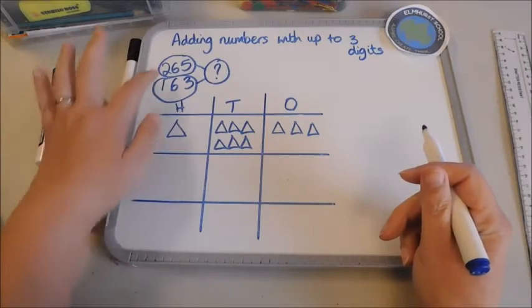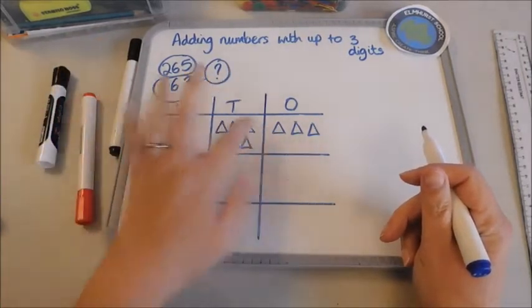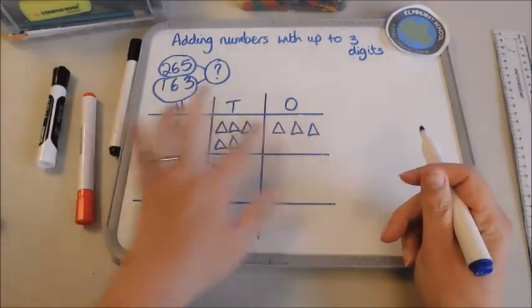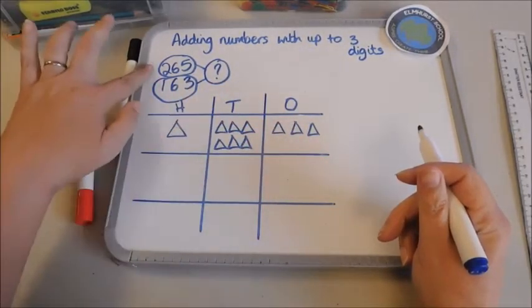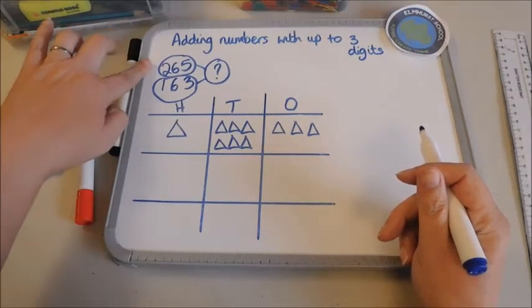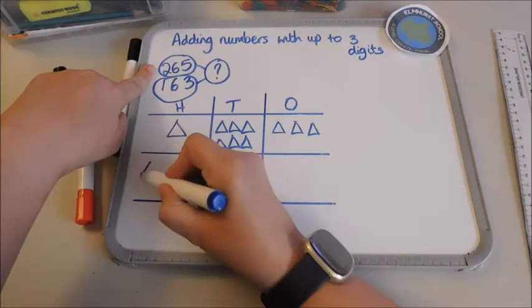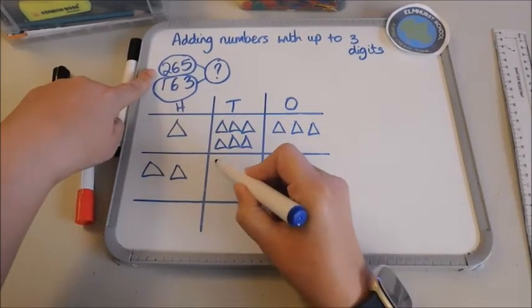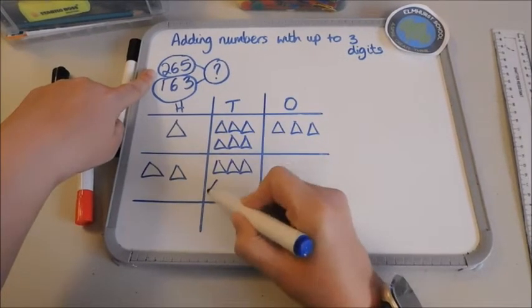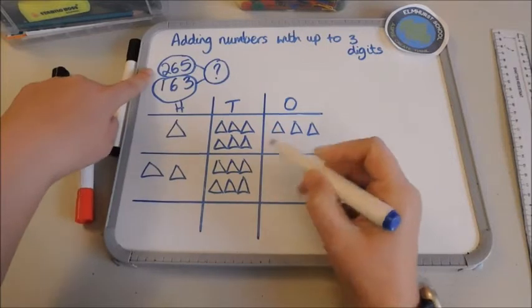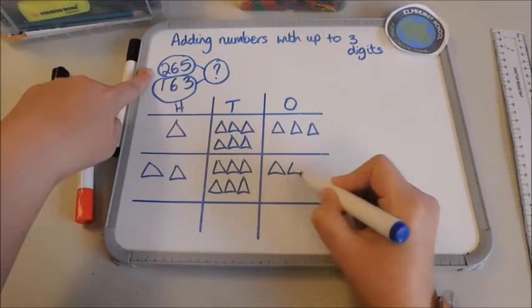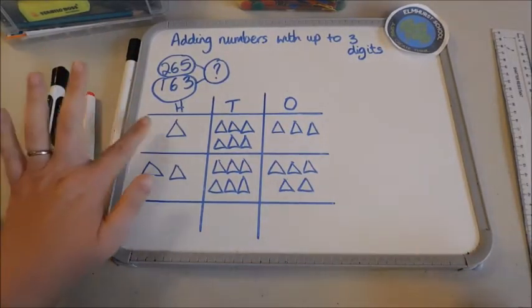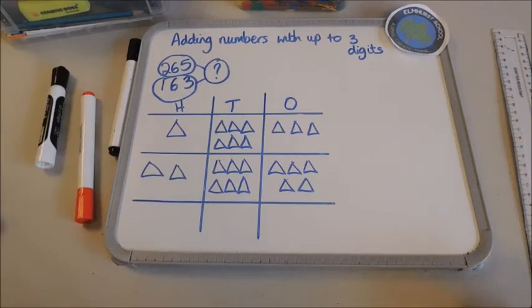So I've got 163, 100 and one two three four five sixty three. Always double check to make sure that they match because lots of children will make mistakes just at that first hurdle there. Now I've done that number I'm going to write in my next number. I've got 265 so I need 260 that's six tens, 265 one two three four five brilliant.